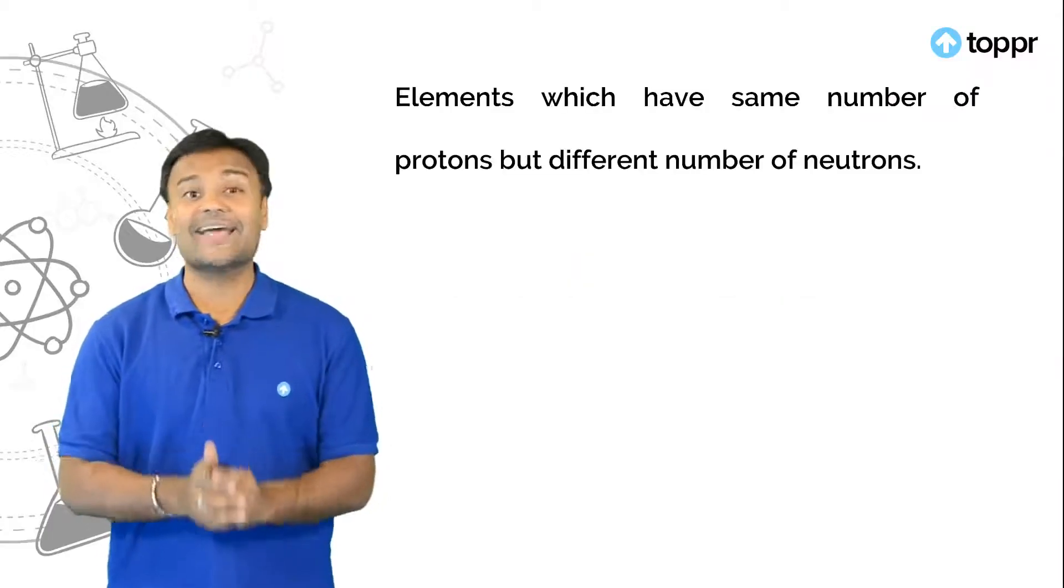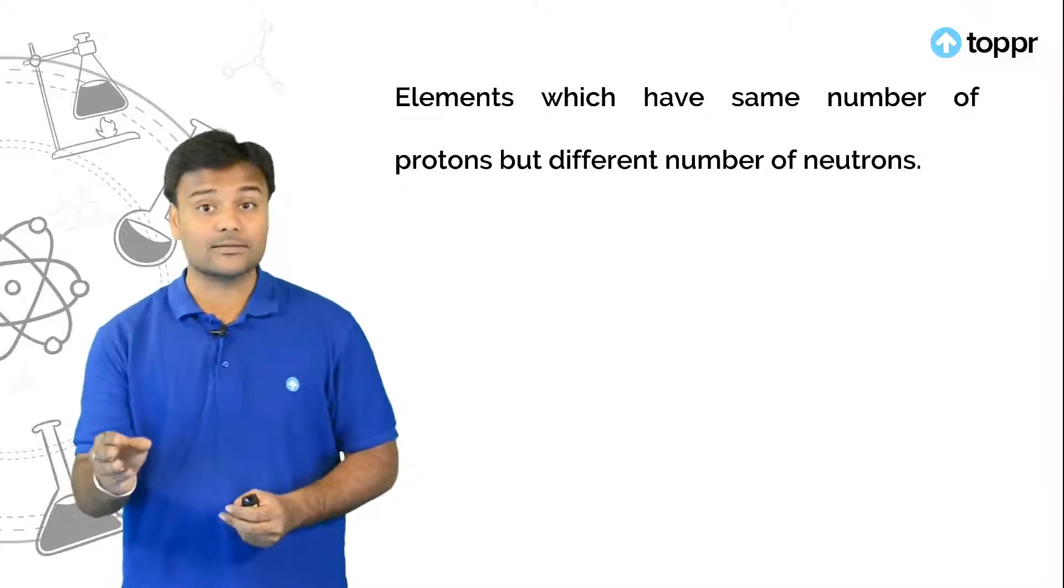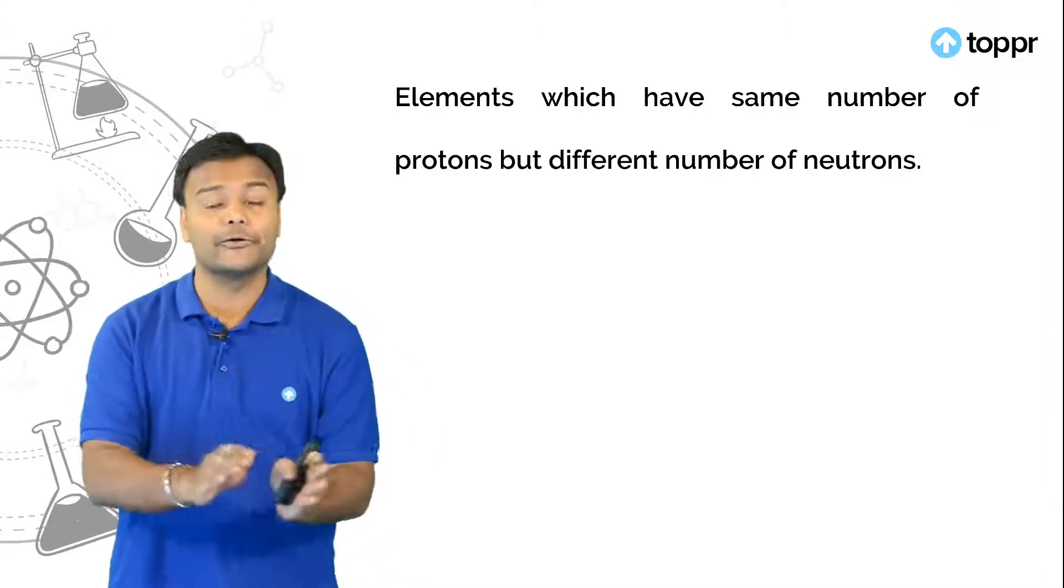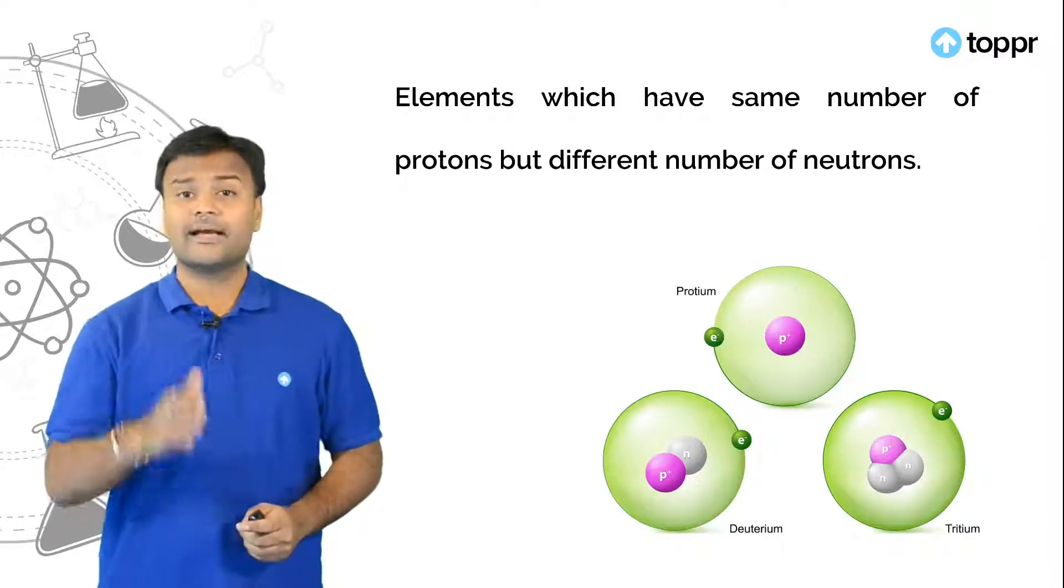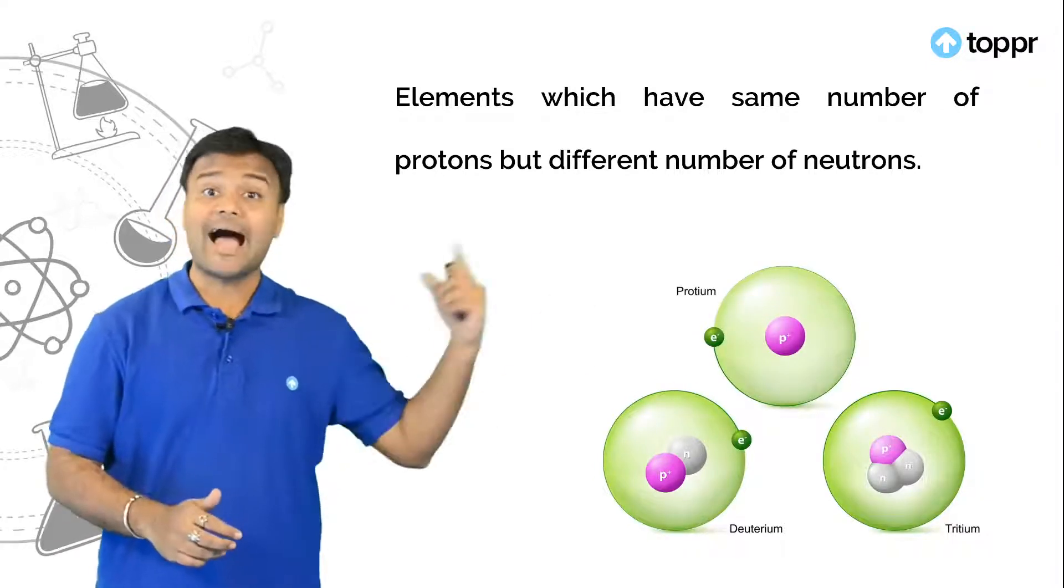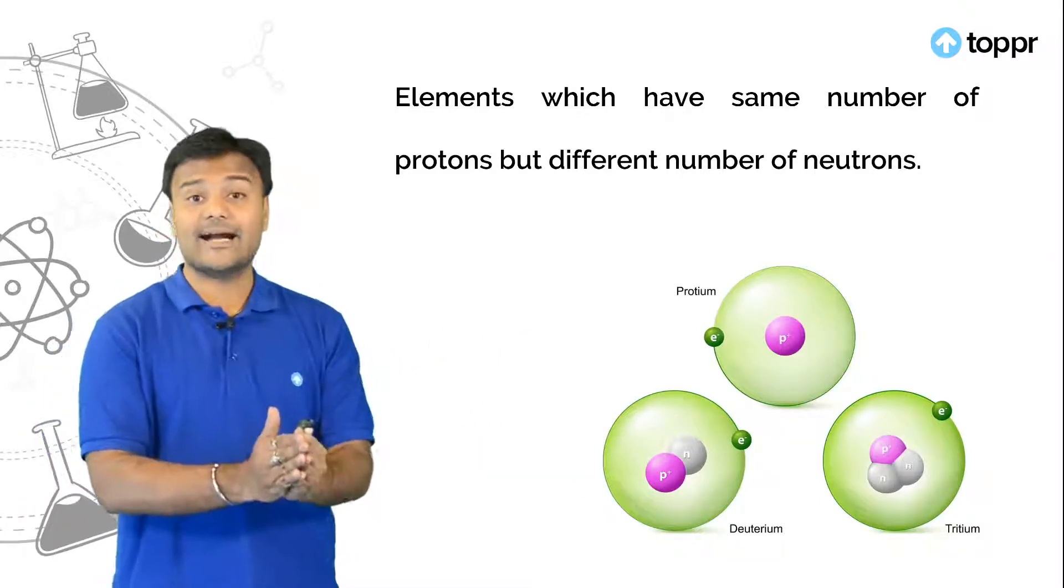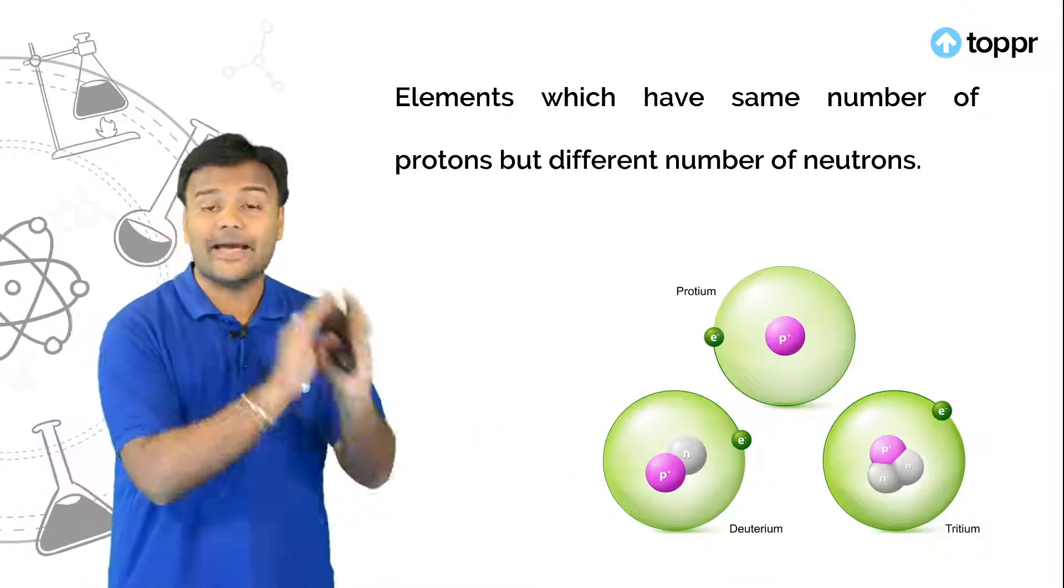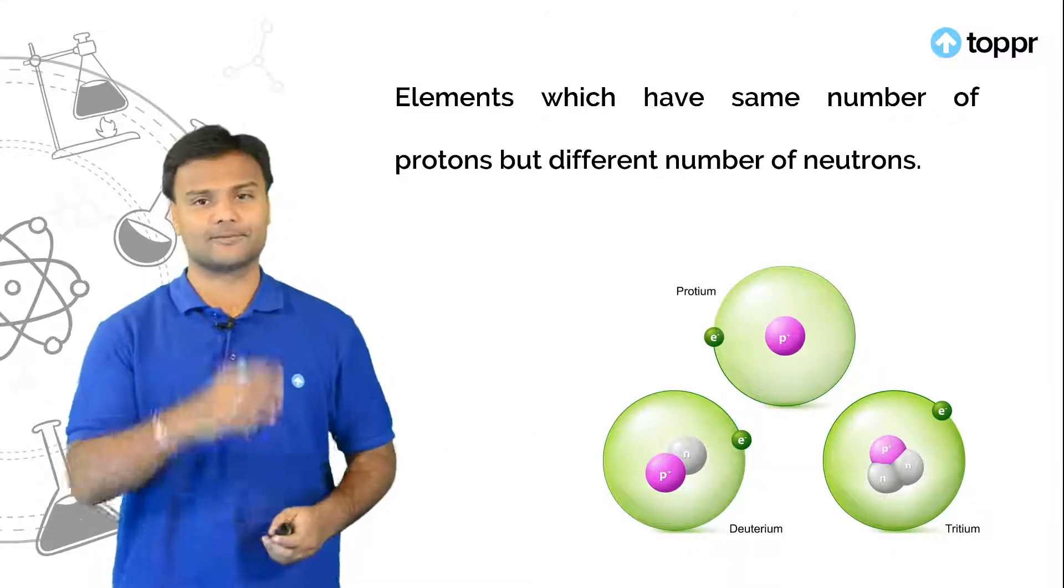What are isotopes? Isotopes are the elements which have similar number of protons but differ in the number of neutrons. Say for example isotopes of hydrogen, protium, deuterium and tritium. So here in this image you can clearly see that it has one proton in every isotope. But there is difference in the number of neutrons.